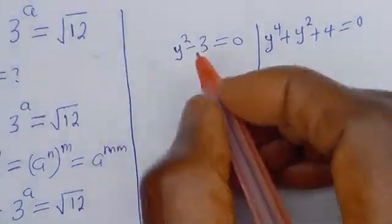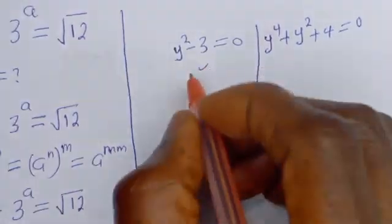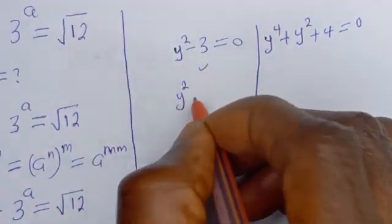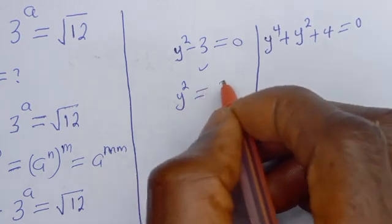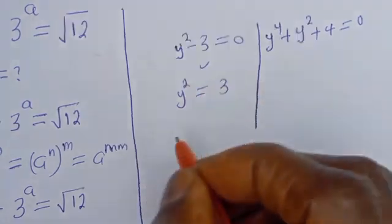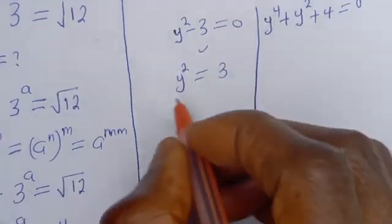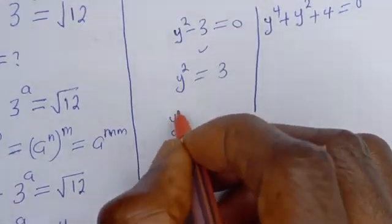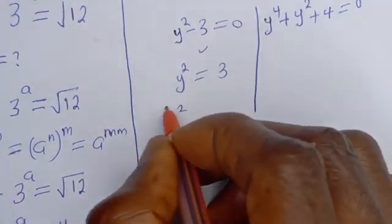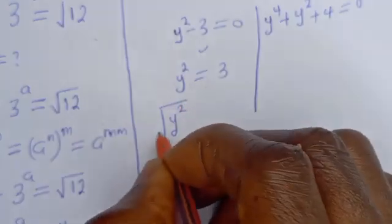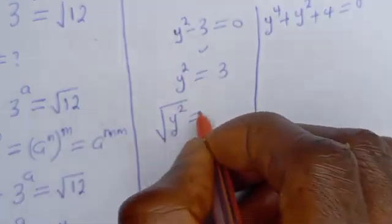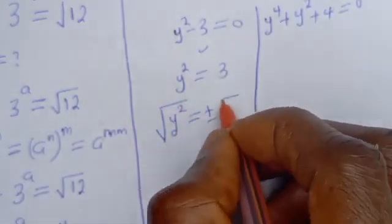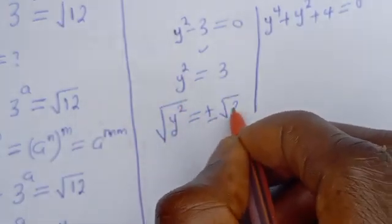Let's consider the first case: y squared minus 3 is equal to 0. Taking the square root of both sides, y is equal to plus or minus the square root of 3.